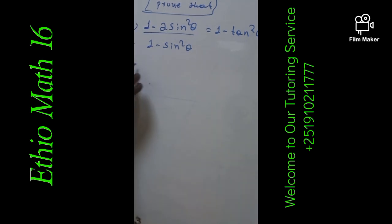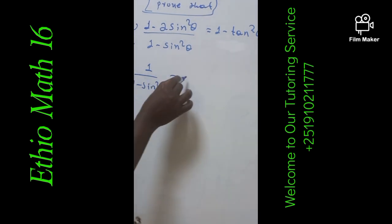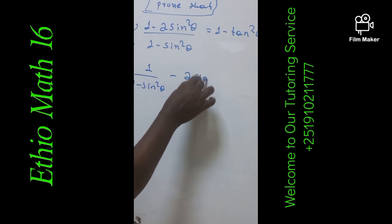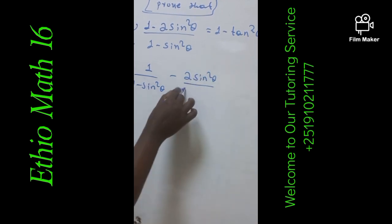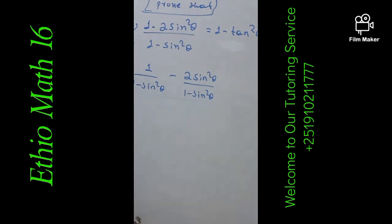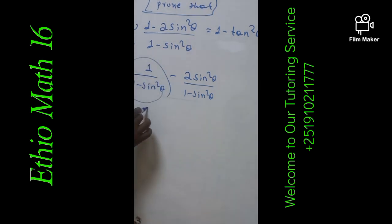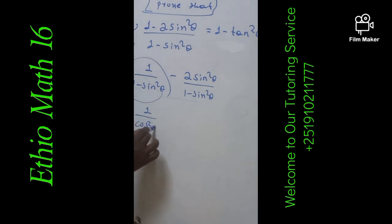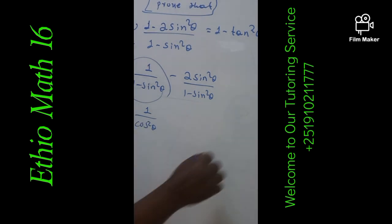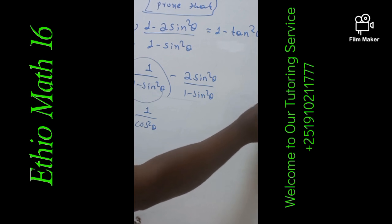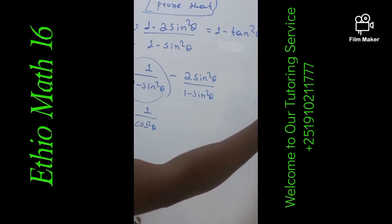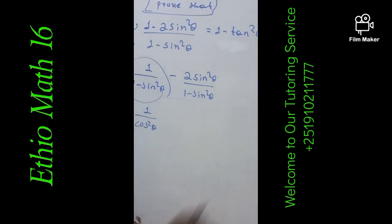So the left side implies that it's written as 1 over (1 minus sin²θ) minus 2sin²θ over (1 minus sin²θ). And you know that 1 minus sin²θ is cos²θ, because sin²θ plus cos²θ equals 1. This is the trigonometric identity.